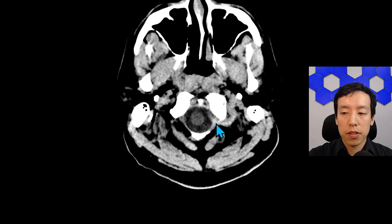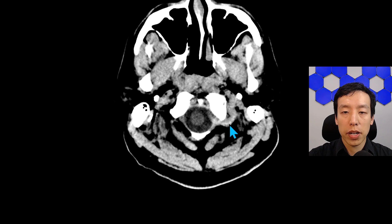Going back to the non-contrast head CT for advanced findings: in retrospect, there is a hyperdensity along the left vertebral artery V3 segment — this can be considered a dense vessel sign. This represents the intramural hematoma, which is hyperdense because it represents coagulated blood. A reasonable radiologist would not have called this prospectively; it is only identifiable in retrospect.